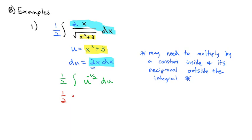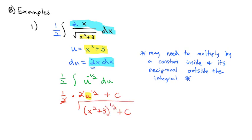Keeping the one-half out front: integrating u to the negative one-half — the exponent increases by 1 to positive one-half, multiplied by the reciprocal of two — plus a constant. The 2s divide out, giving u to the one-half plus a constant. Substituting back, u equals x² + 3, so the answer is (x² + 3)^(1/2) plus a constant.